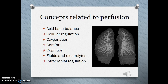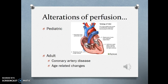The related concepts with perfusion are many. Acid-base balance is one, because when the body doesn't get enough blood or oxygen it goes into a lactic acidosis. Cellular regulation — we need blood to carry oxygen, and we talked about anemia as it relates to cellular regulation. Certainly oxygenation, comfort, and cognition are related; if you're hypoxic you're not going to think straight. Fluids and electrolytes and intracranial regulation are also related. Within the pediatric population, most of what you're dealing with is related to congenital heart defects, the most common being tetralogy of Fallot.